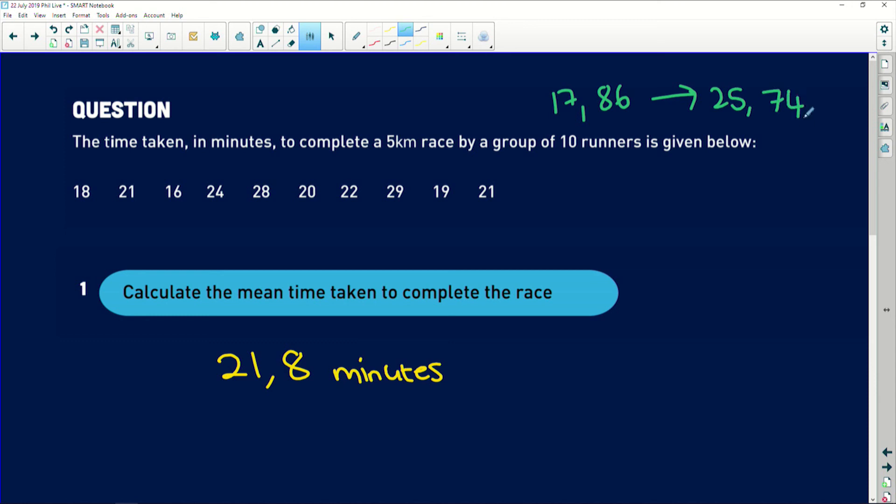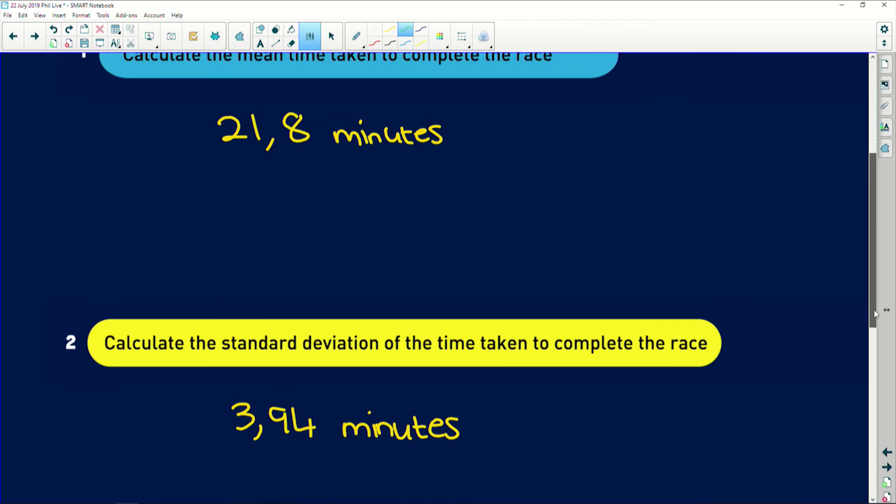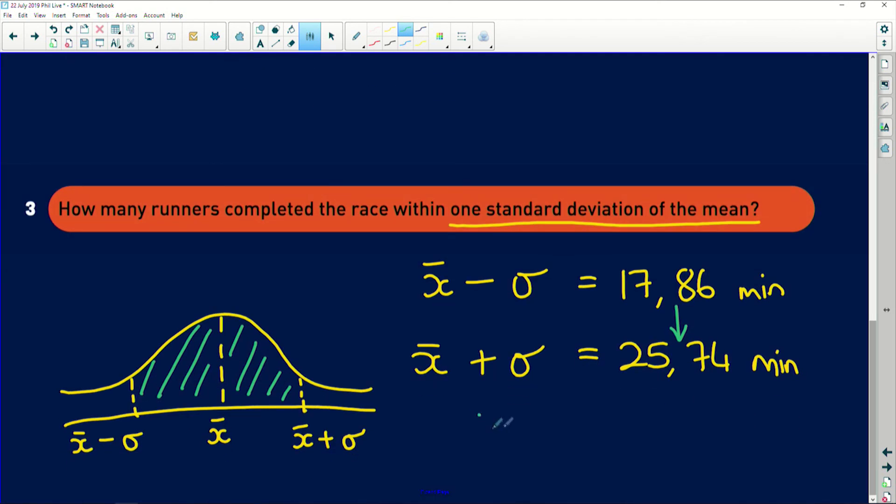So, this one would definitely fall in that interval, so would this one, this one would not, this one definitely would, this one wouldn't, would, would, definitely wouldn't, would, and would. So we have one, two, three, four, five, six, seven runners whose times fall within one standard deviation of the mean. Seven runners.